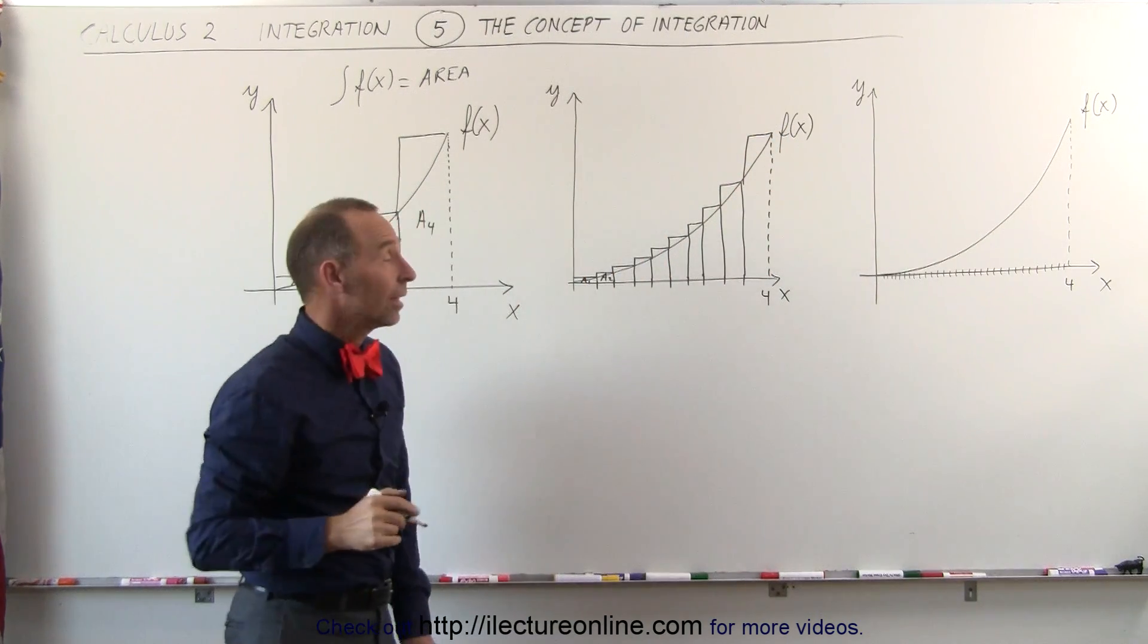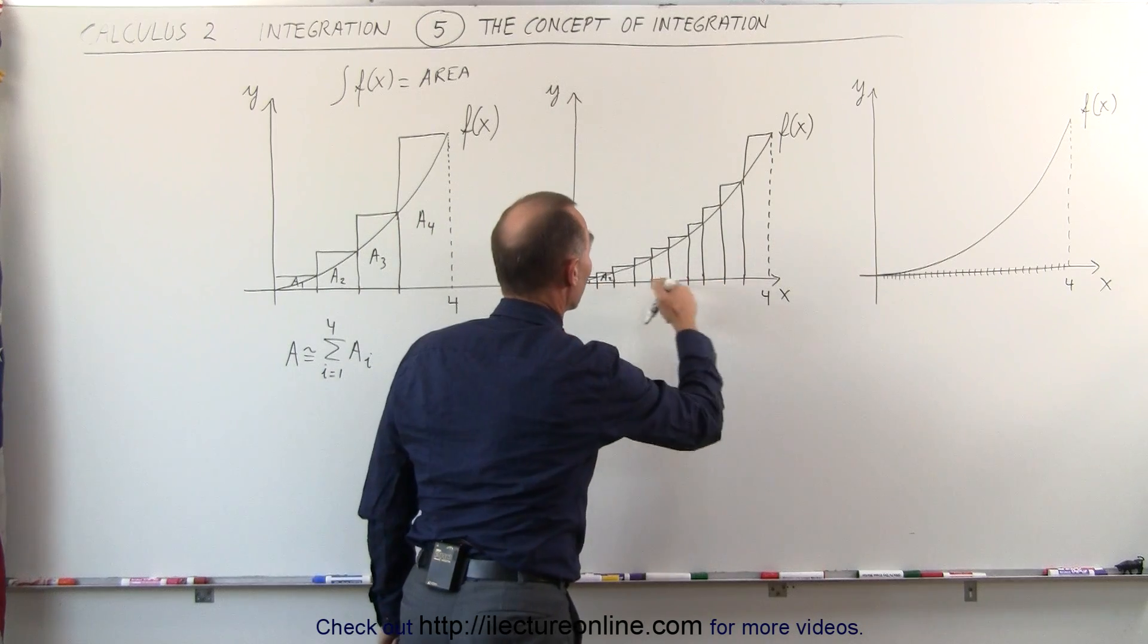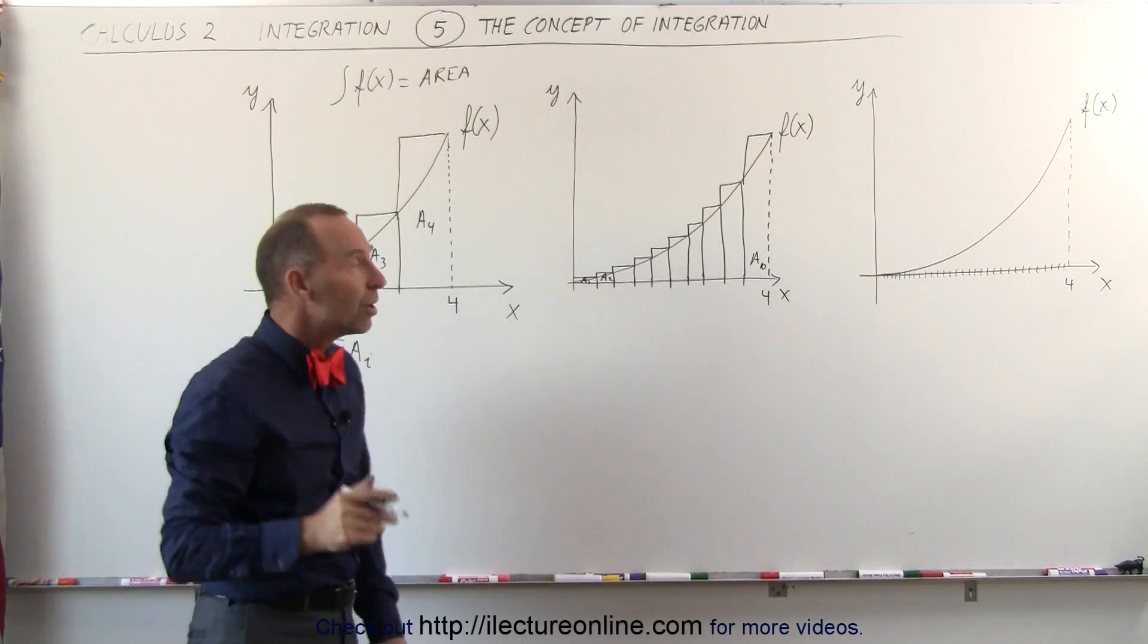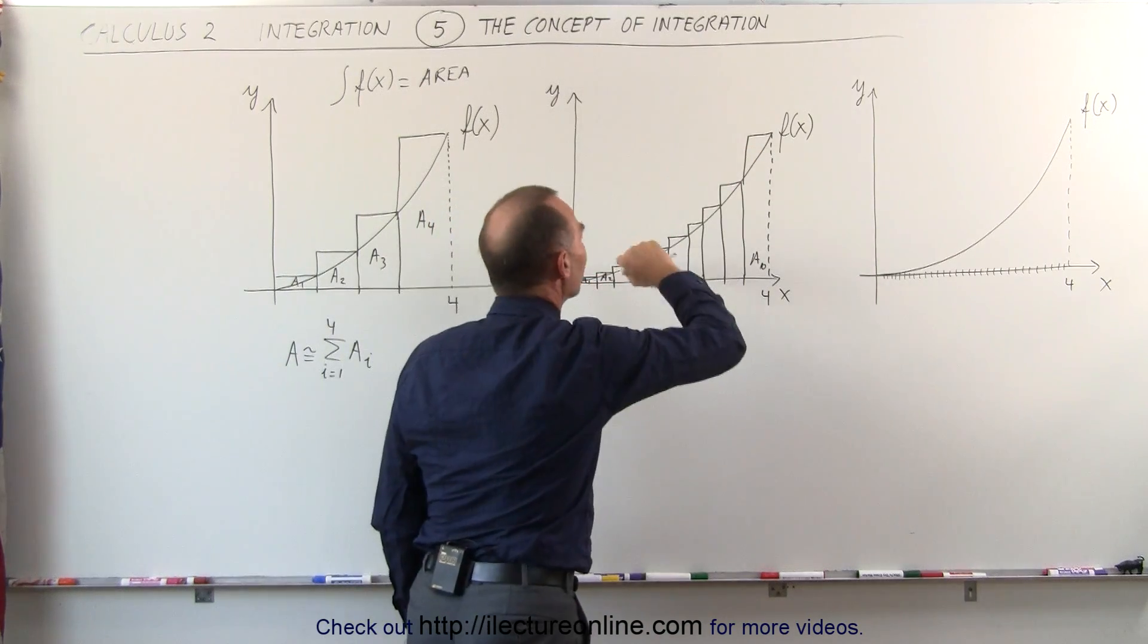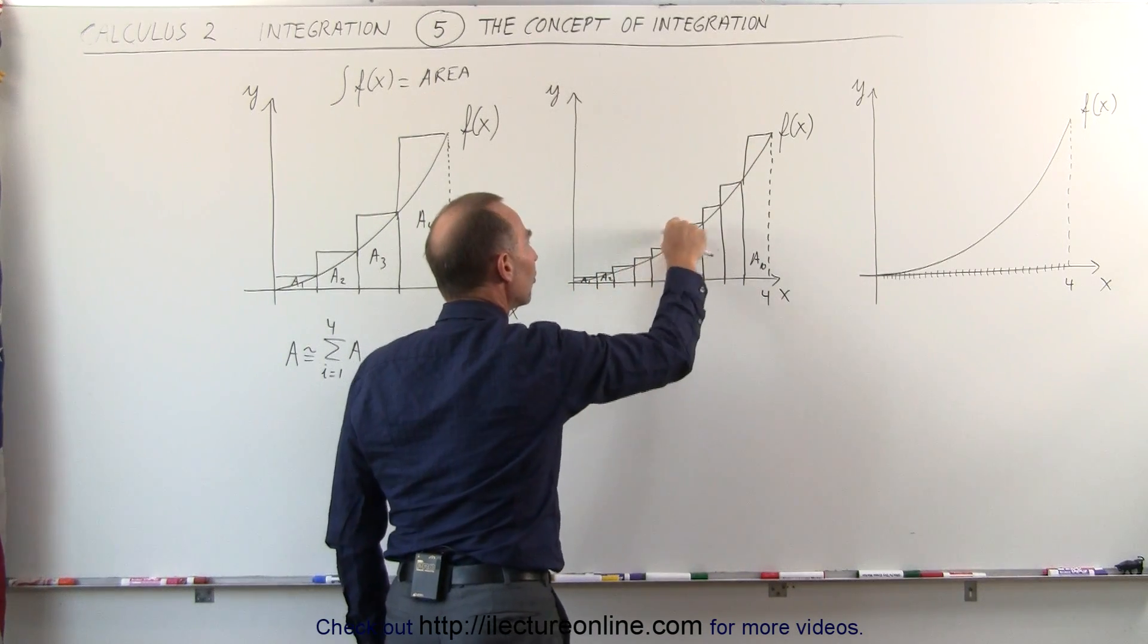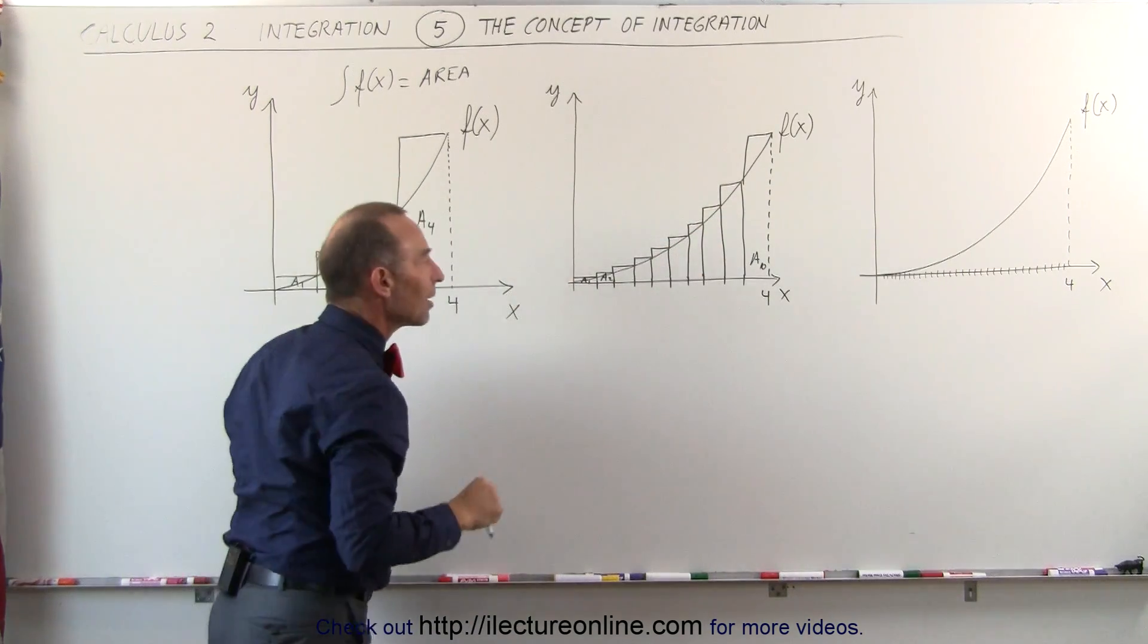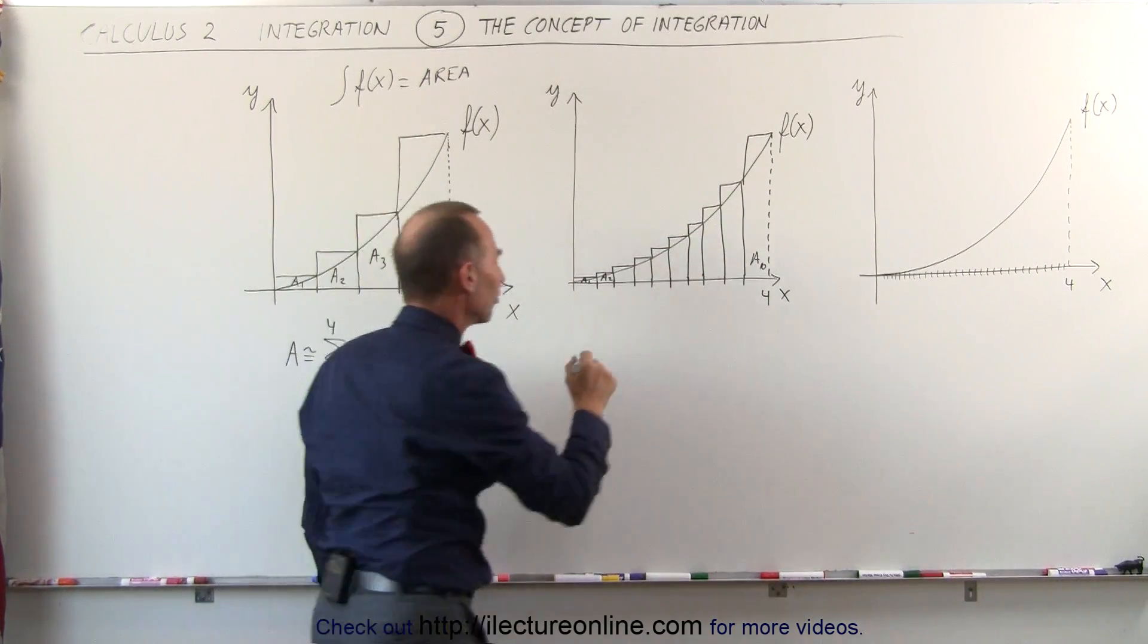Now you can see that if I add up those 10 areas from 1 all the way up to area 10, there's not as much that pokes up above the curve, so if I add up all these additional areas, those are definitely smaller than the total of these 4 right here.